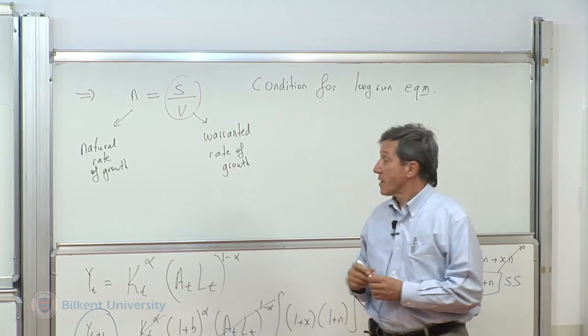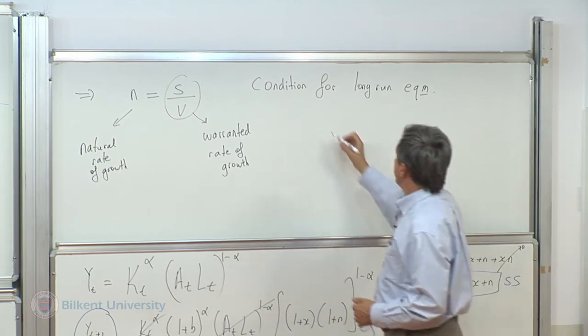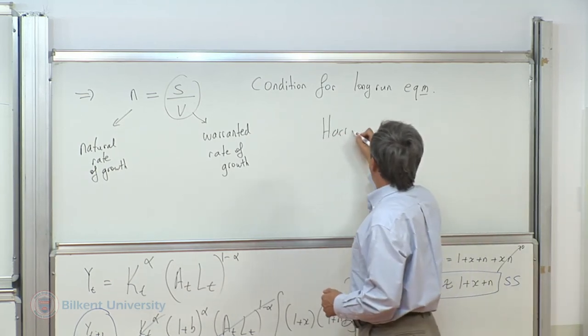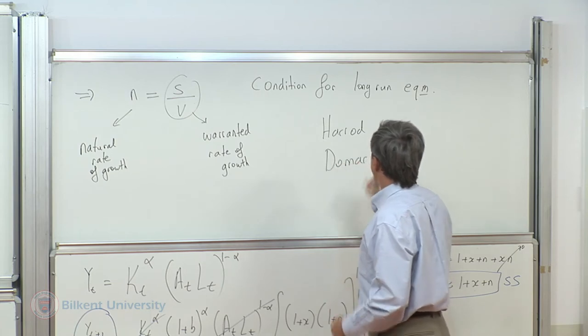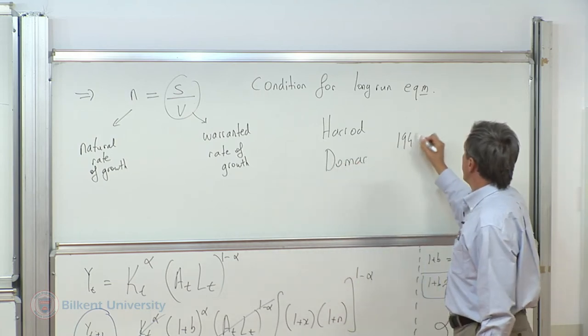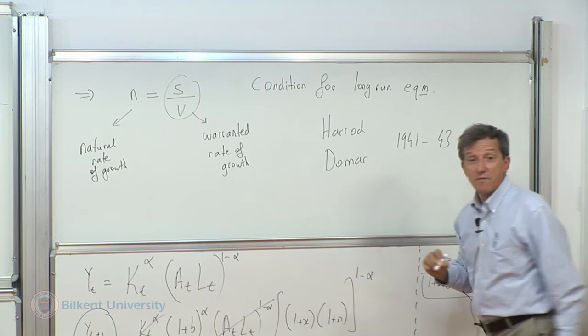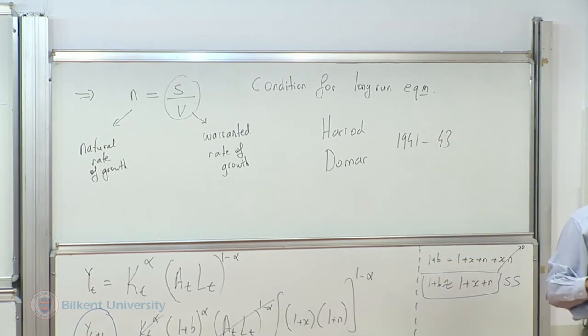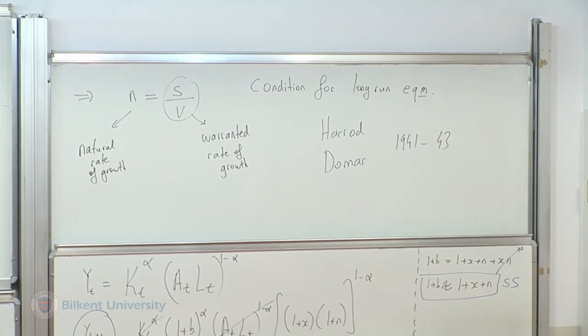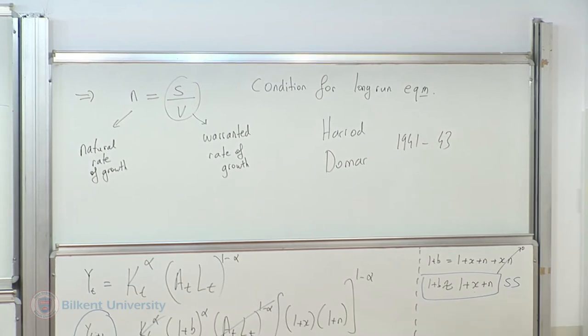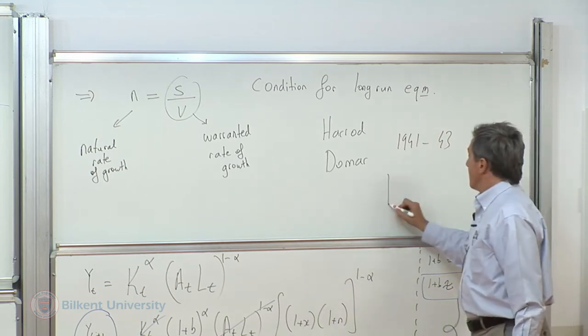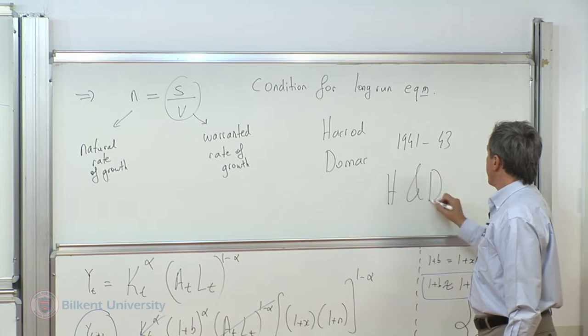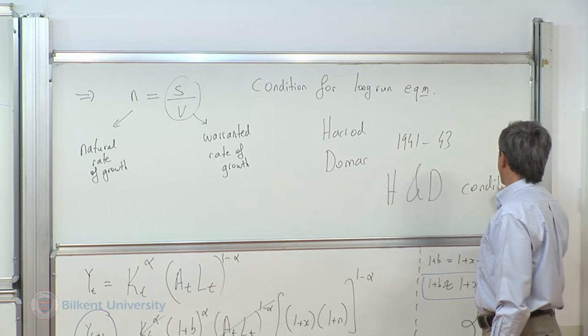This condition was worked by Domar and Harrod back in 1941 to 1943. It is called the precondition for equilibrium growth. It is known as the Harrod-Domar condition.